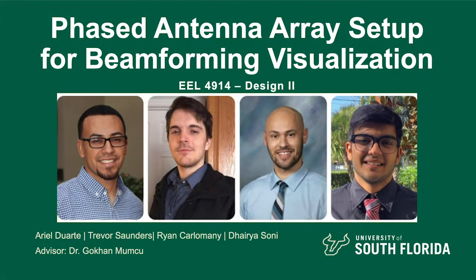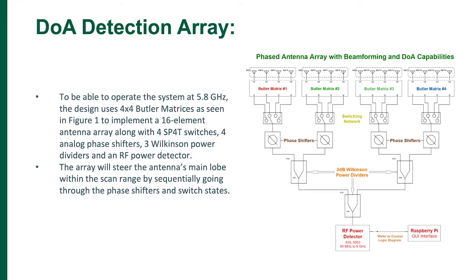I will start this video presentation by discussing the RF side of the DoA detection array that I worked on. Here the figure on the right is the top level schematic of our DoA detection system. To be able to operate the system at 5.8 gigahertz, the design uses four 4x4 Butler matrices to implement a 16-element antenna array with four switches, four analog phase shifters, three power dividers, and an RF power detector. The array will steer the antenna's main lobe within the scan range by sequentially going through the phase shifters and switch states.